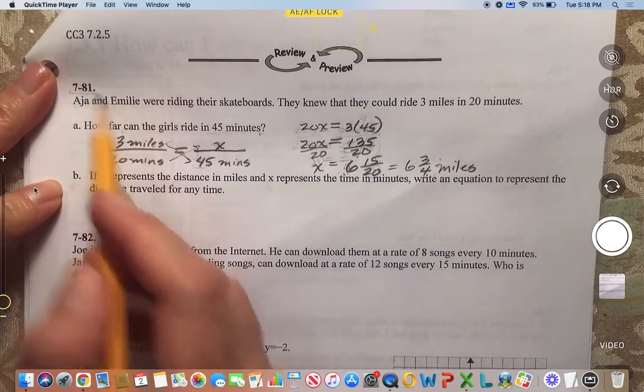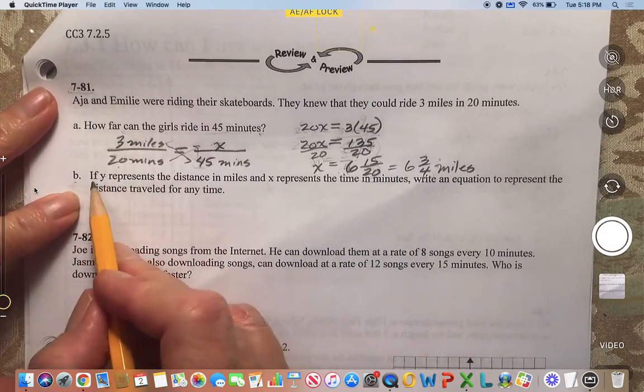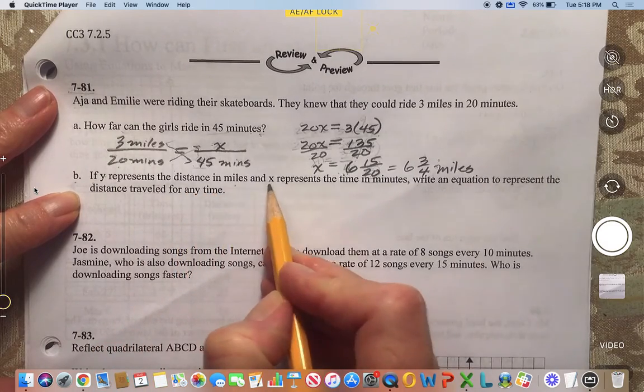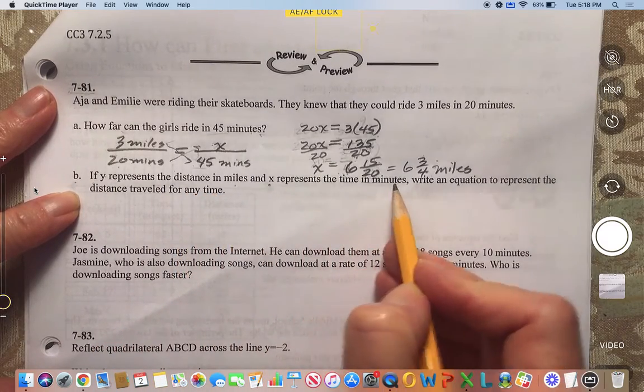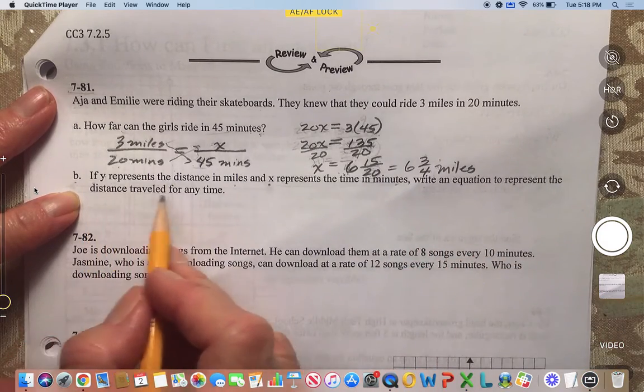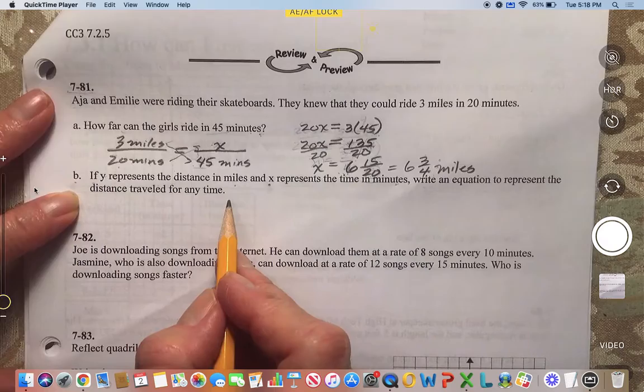Okay, now we're going to do 7-81a. If y represents the distance in miles and x represents the time in minutes, write an equation to represent the distance traveled for any time.